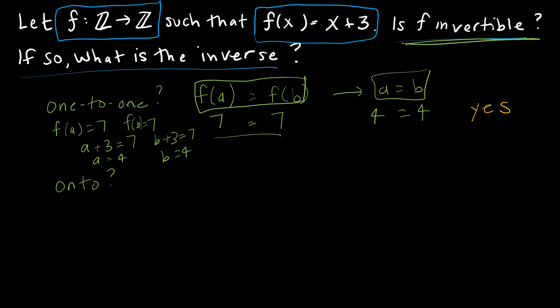Now let's take a look at onto. Remember that onto tells us that every value in the codomain must be mapped to by one element in the domain. So the question is, is there ever going to be an integer that isn't mapped to by some other integer? So again, we've just shown that if we want to map to 7, all we have to do is use 4. 4 maps to 7. What if we wanted to map to 8? What value plus 3 is equal to 8? Well, 5 maps to 8. Is there ever going to be anything here in the codomain that doesn't have some value that maps to it? And the answer is no. Everything is going to get mapped to. So is this onto? Yes, it is.